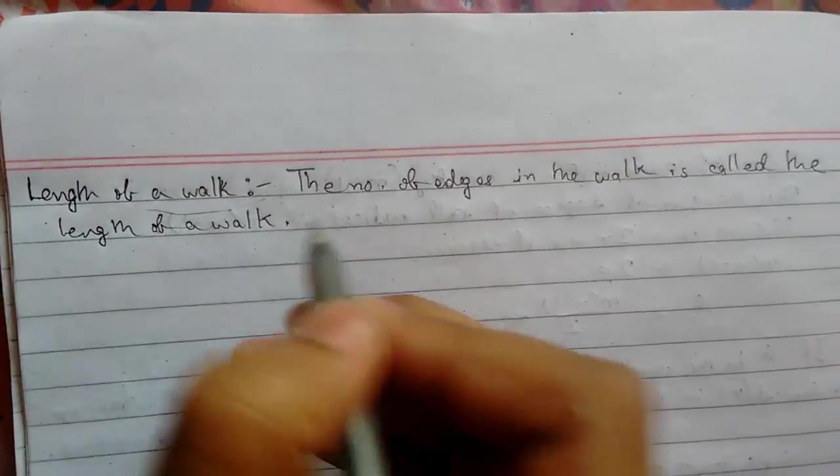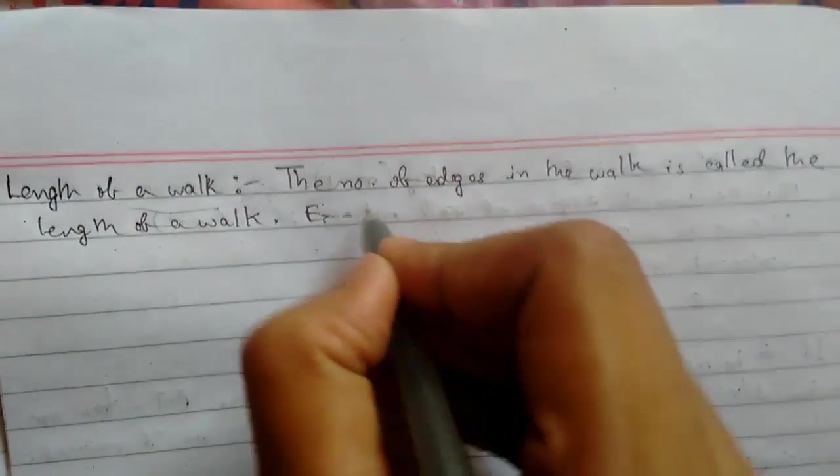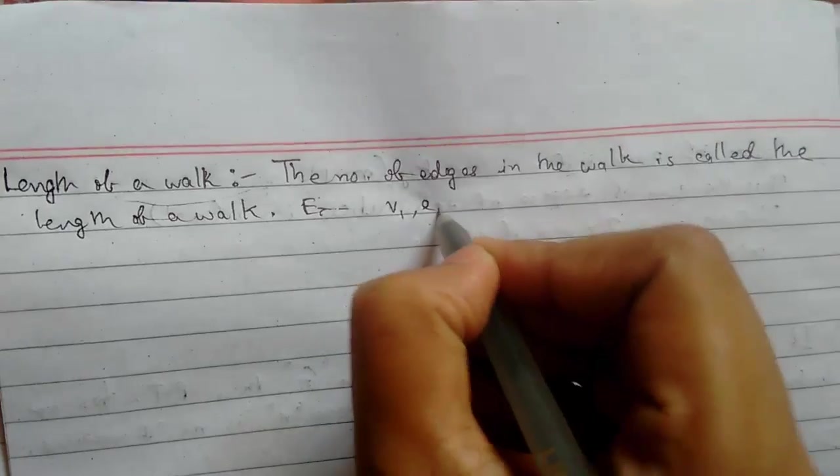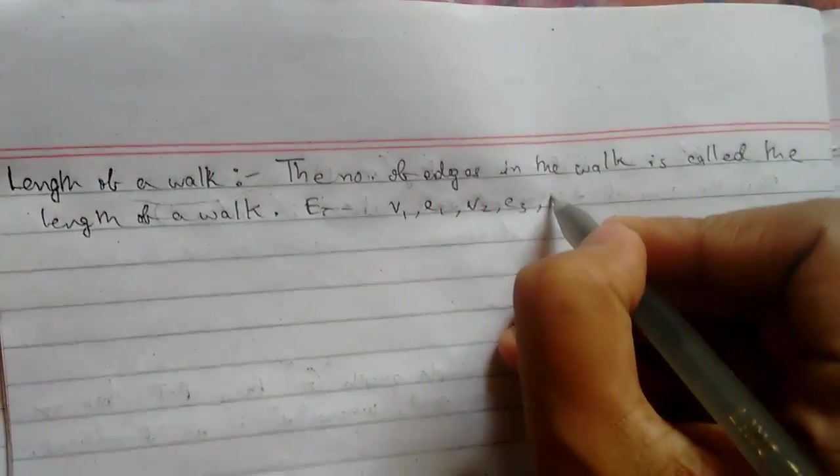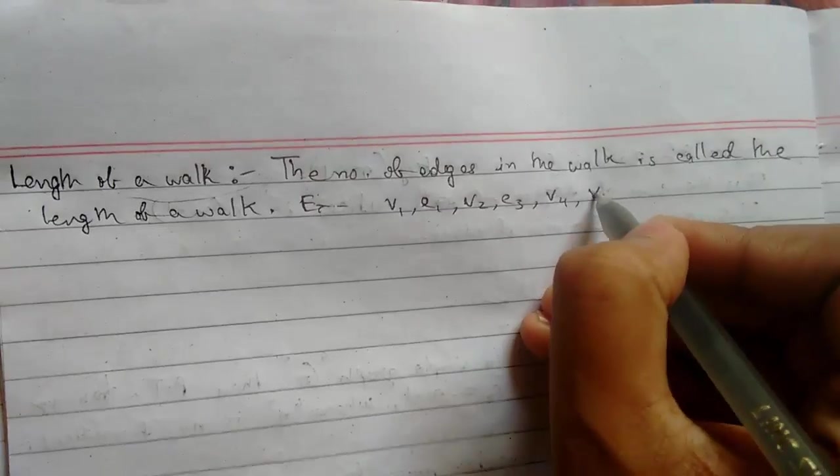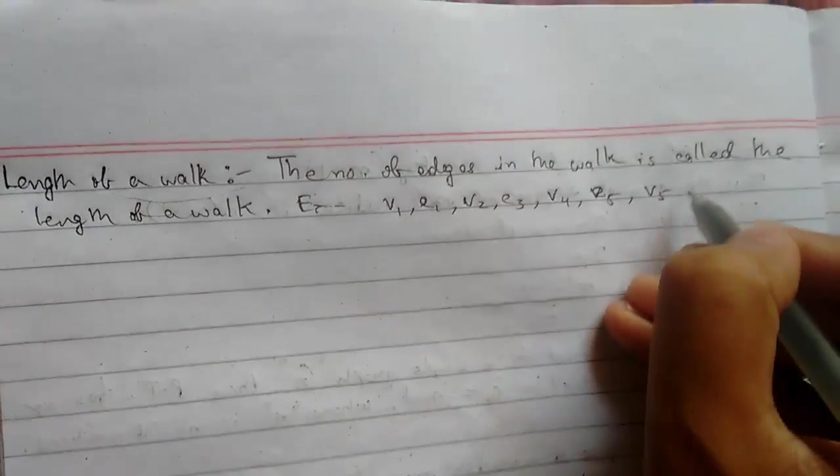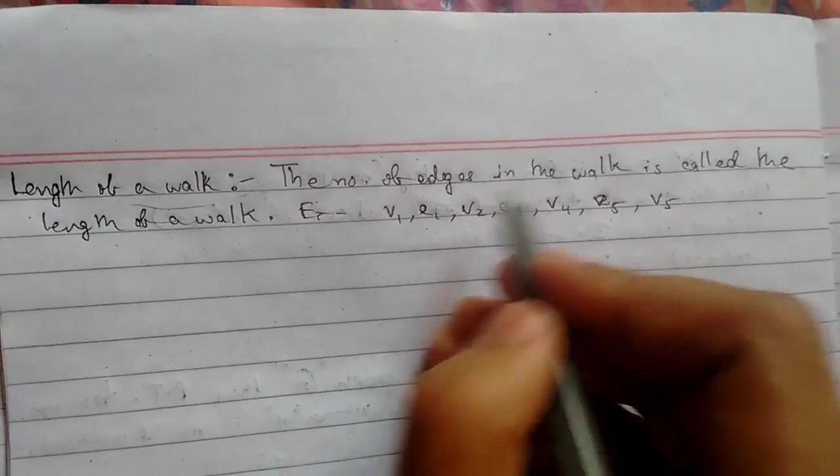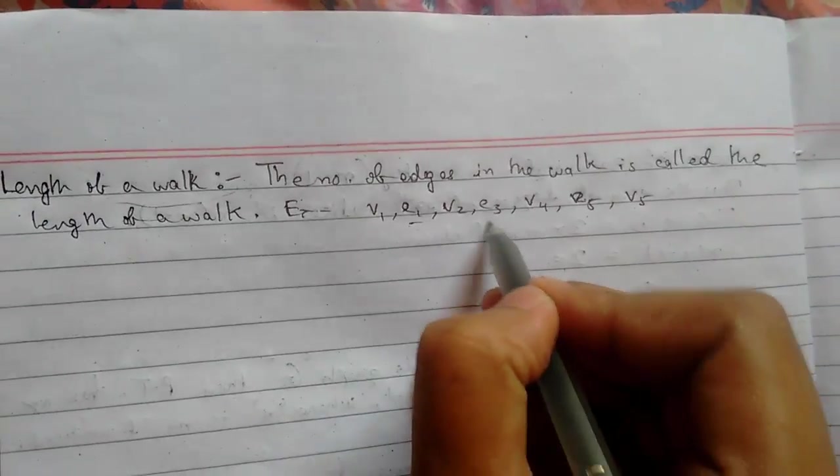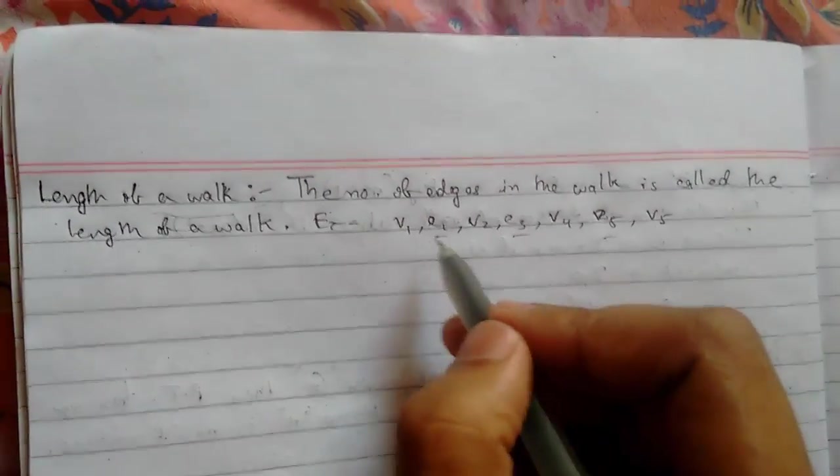So suppose for example we have a walk like this: v1, e1, v2, e3, v4, v7, e5, v5. So the number of edges in a walk: 1, 2, 3. So the length of the walk will be 3.